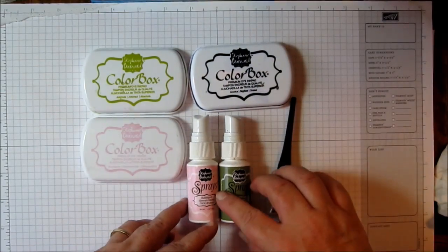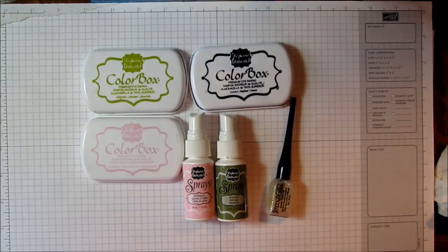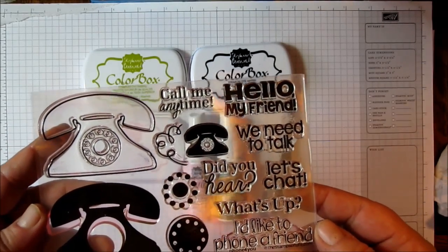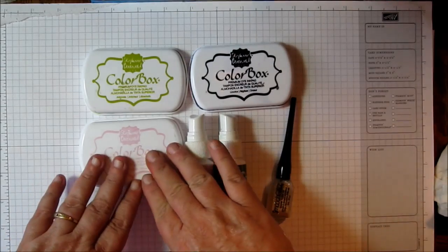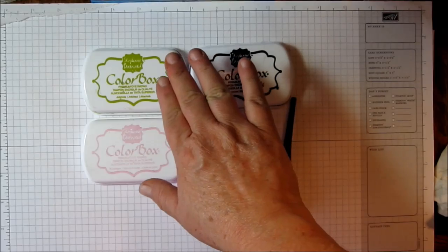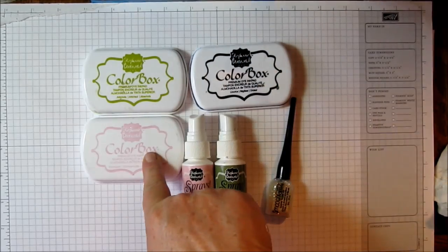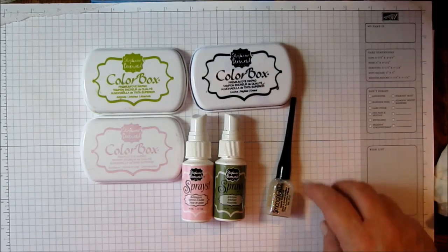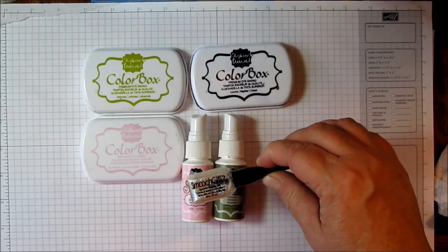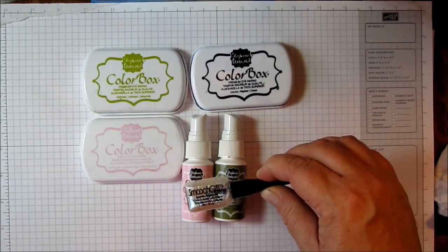These are the products I'm going to be using. First, it's a new stamp set from the Stamps of Life called Phone for You. For inks, I used artichoke, bubblegum, and licorice. For sprays, I used bubblegum and artichoke, and of course the Smooch Glitz that I'm going to be using for my resist.